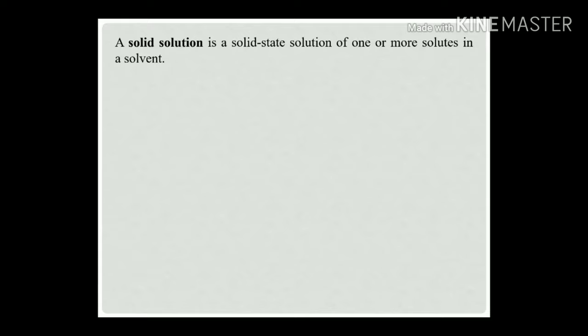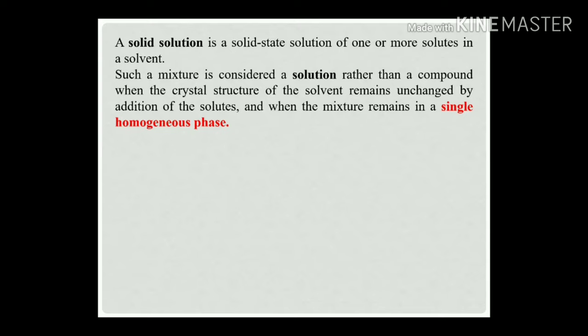A solid solution means one metal A is dissolved into metal B. One metal is dissolved into another metal forming a new material. The added atoms from the material are called solute metal atoms, which occupy space in the solvent structure to form a new material called a solid solution. By definition, a solid solution is a solid-state solution of one or more solutes into a solvent, and is considered a solution rather than a compound when the crystal structure of the solvent remains unchanged by the addition of solutes.